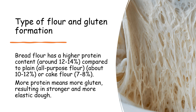Bread flour has a higher protein content of around 12–14%, compared to plain flour, also known as all-purpose flour, which is around 10–12%. There is also cake flour, which is around 7–8% and has the lowest protein content. More protein means more gluten can be made, resulting in a stronger and more elastic dough.